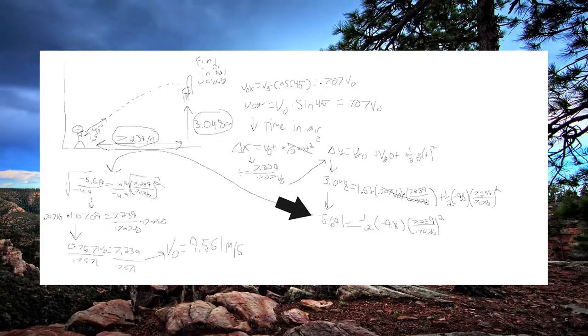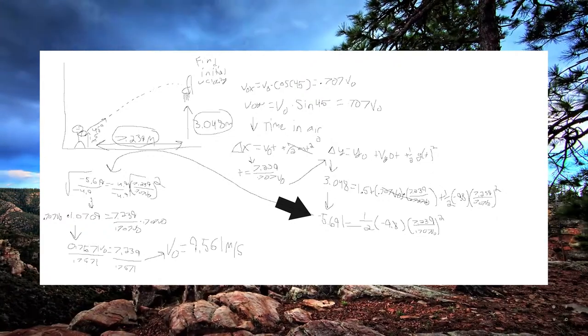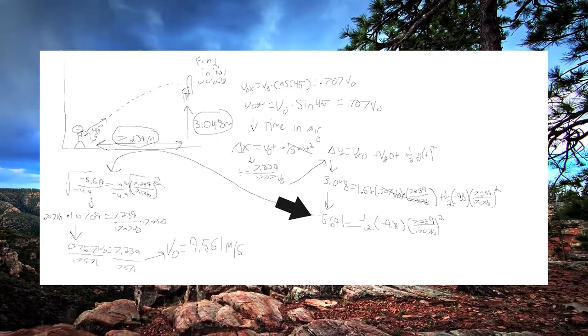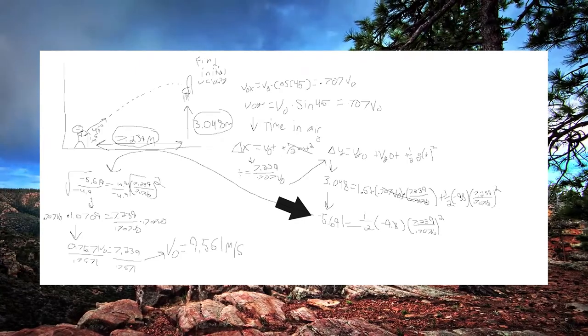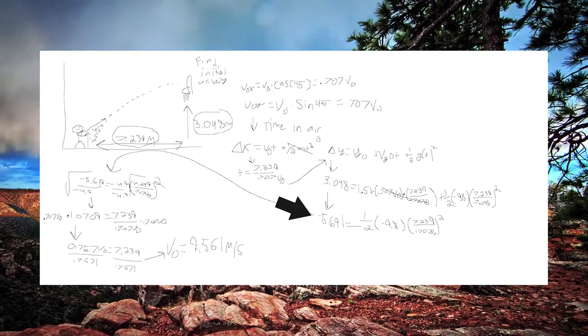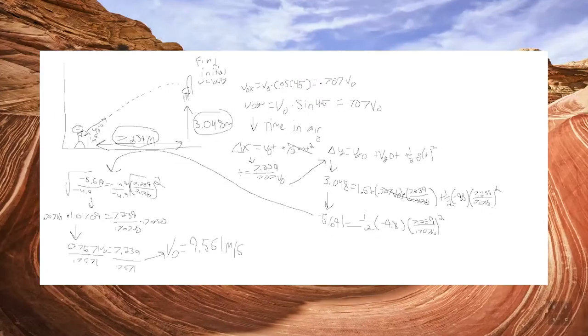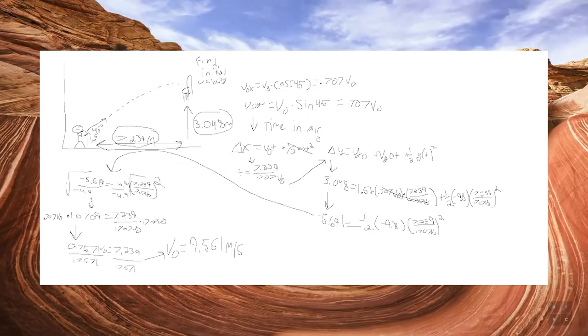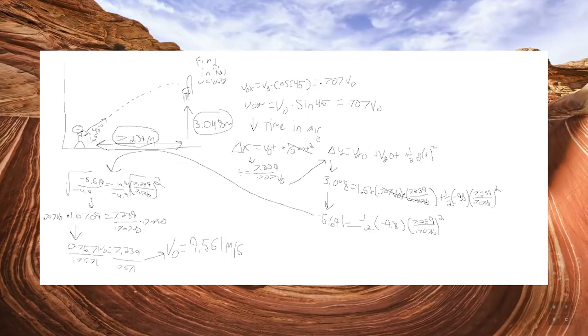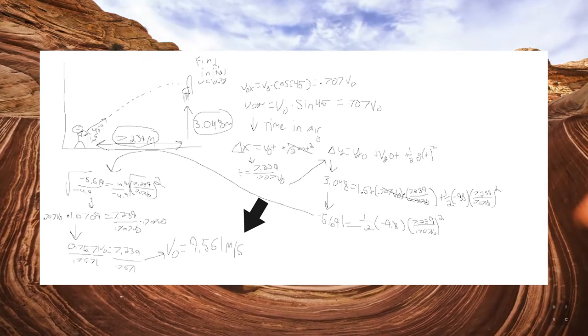By further solving for v-naught, they eventually came to the conclusion that the velocity needed to throw the ball for it to reach the hoop is 9.561 meters per second exactly.